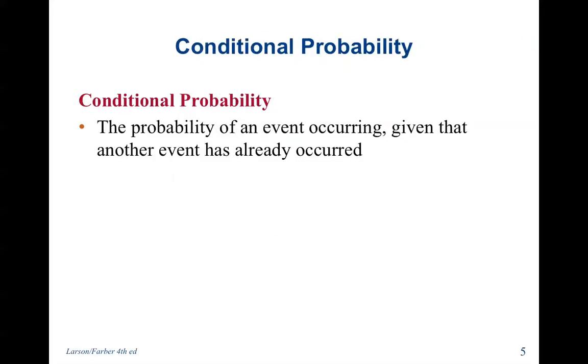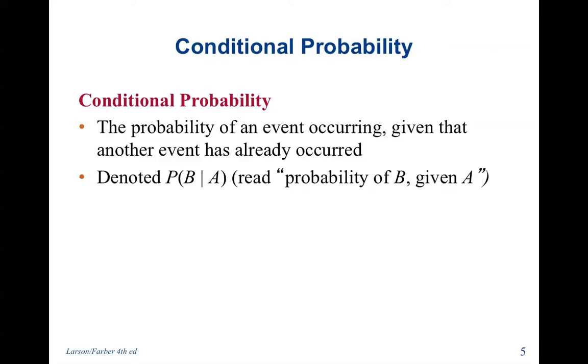A conditional probability is the probability of an event occurring given that another event has already occurred, denoted as the probability of B given A.